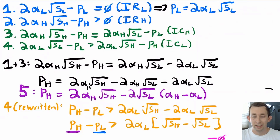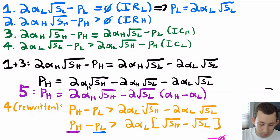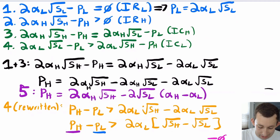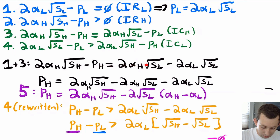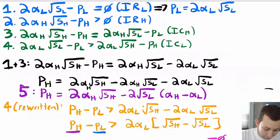Here are the four constraints rewritten with the binding and holding assumptions. IR_L binds (equal to zero), IR_H holds (greater than zero), same for IC_H binding and IC_L holding. From equation 1, price for low types is P_L = 2α_L√S_L. Combining with equation 3 (the binding IC_H), we can solve for P_H — I'll call that simplified equation 5. Then I rewrite equation 4 as P_H − P_L, and since I have expressions for both, it's going to work nicely.